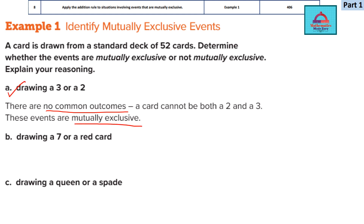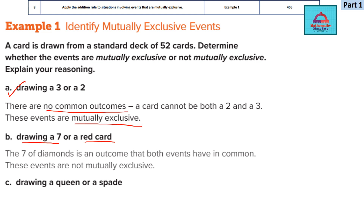For part B, the events are not mutually exclusive. If you draw a seven and a red card, you will get some common outcomes. The common outcome here is the seven of diamonds — it is red in color and has the number seven. Since they share a common outcome, they are not mutually exclusive.